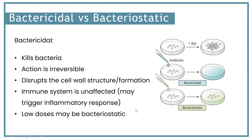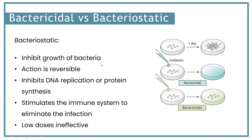Low doses of bactericidal antibiotics can also have a bacteriostatic effect. Bacteriostatic antibiotics inhibit the growth of bacteria - the action is reversible. As you can see in the petri dish, once you apply the antibiotic the bacteria stop growing but don't go away, so it depends on the immune system to eliminate the infection. It usually does this by inhibiting DNA replication or protein synthesis, and low doses of these antibiotics can be ineffective.